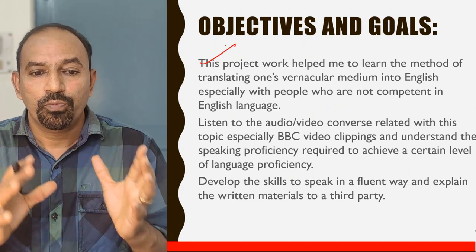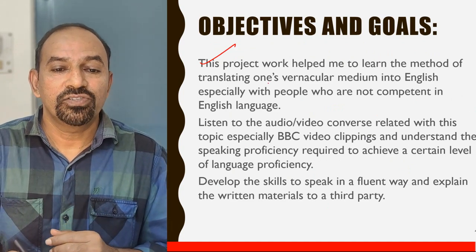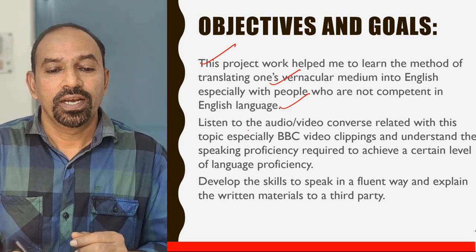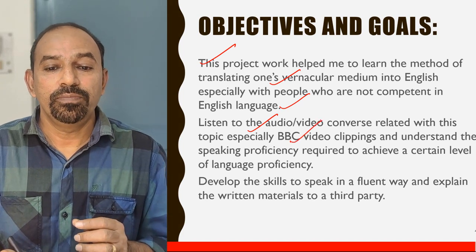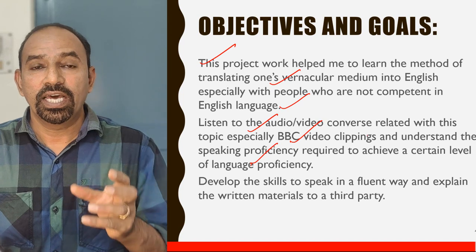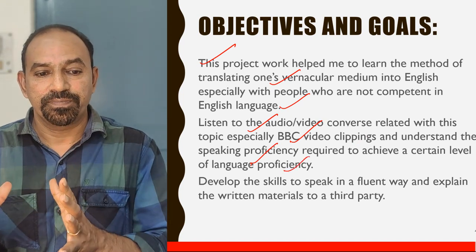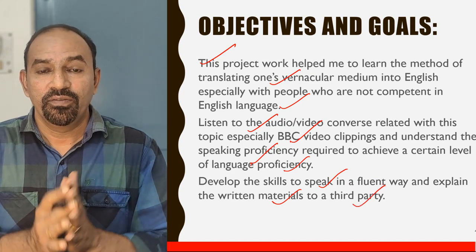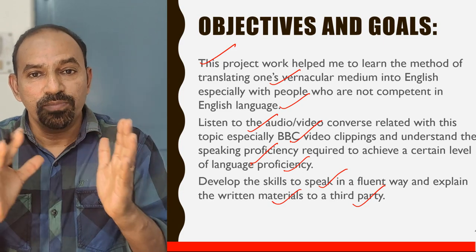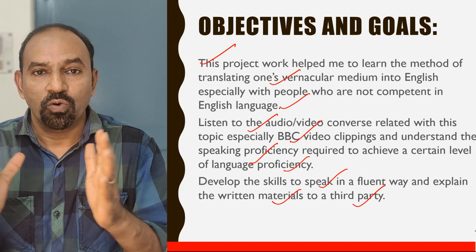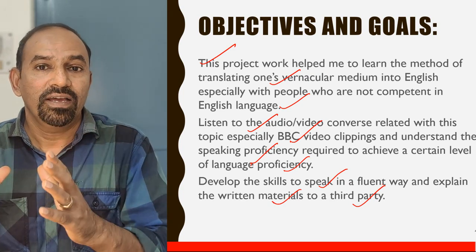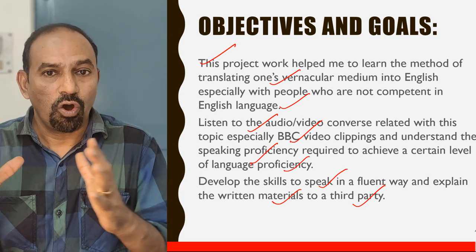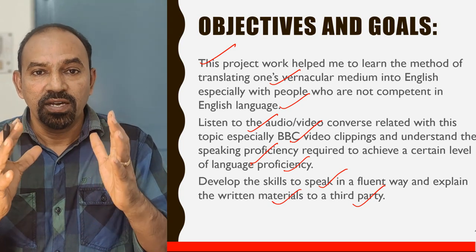Continue the objectives: the project helped you learn methods of translating vernacular medium to English, especially with people not competent in English. Next, listen to audio-video content related to the topic — especially BBC video clippings — to understand the speaking proficiency required. Develop skills to speak fluently and explain written materials. After preparing the project, you submit it to the internal or external examiner, who will conduct a VIVA — an interview-like discussion on the project. These are the objectives, written in one page.